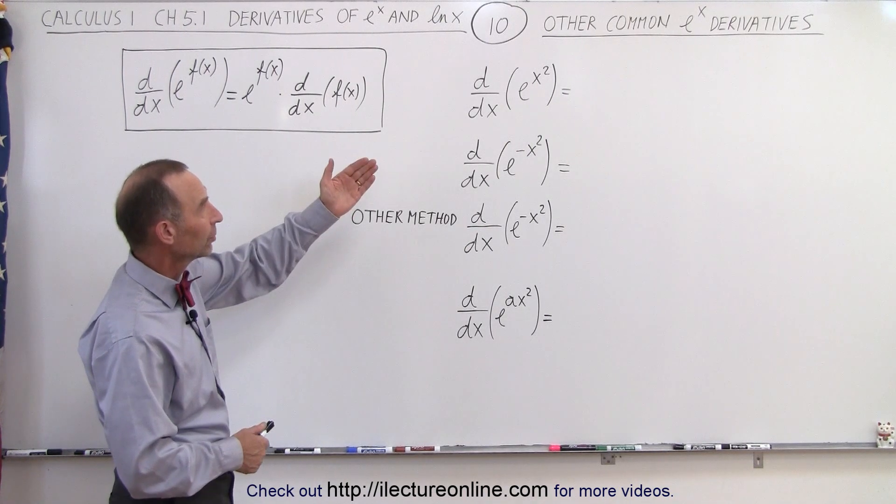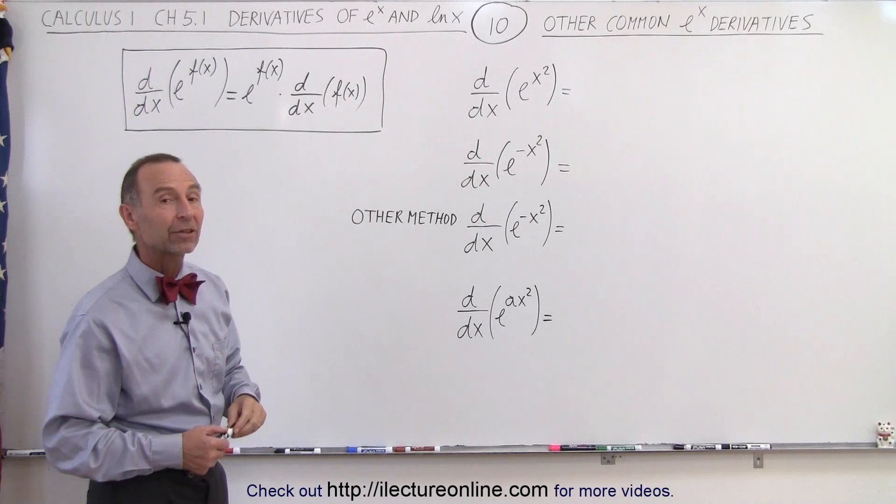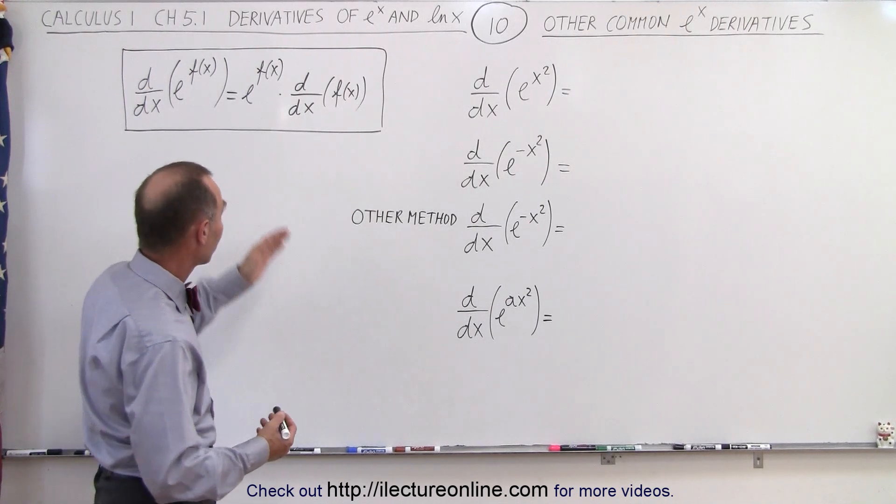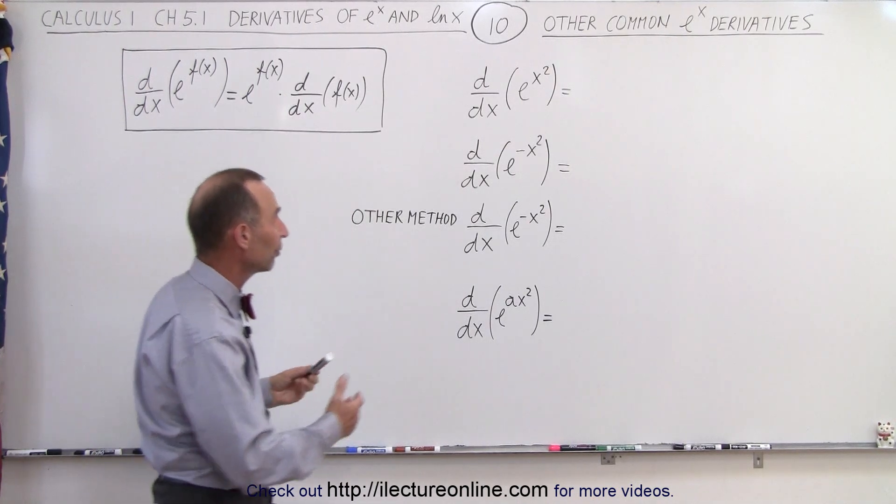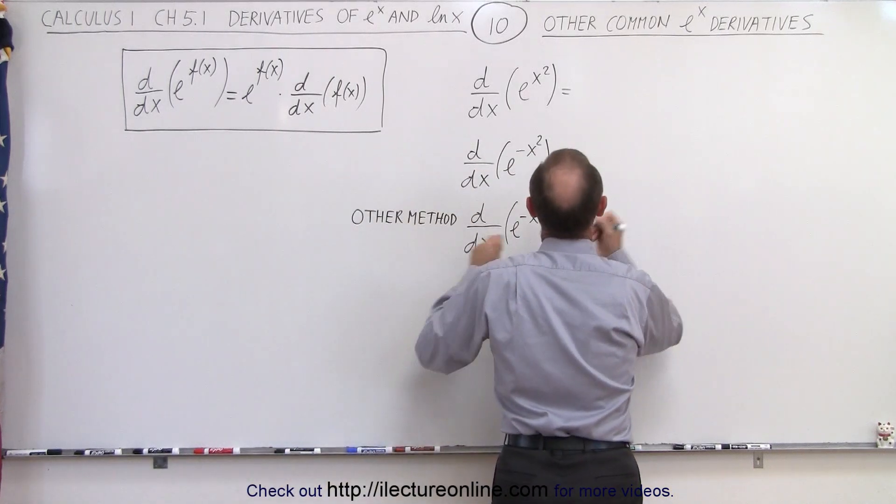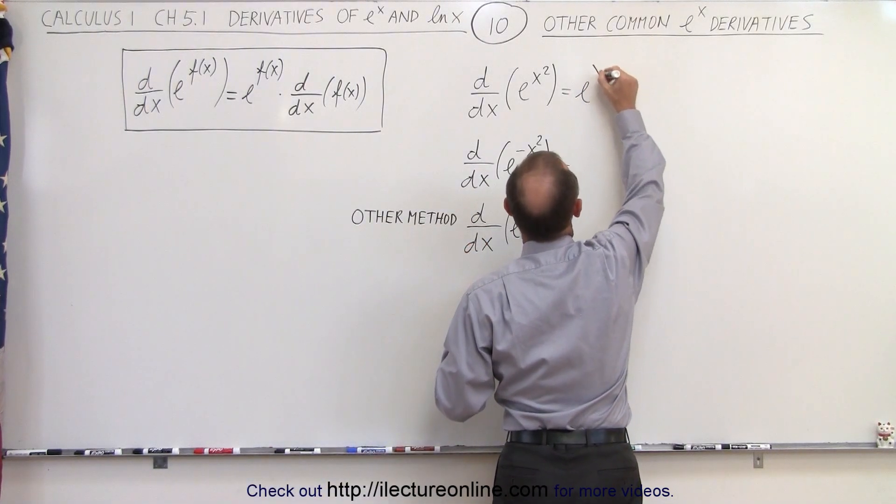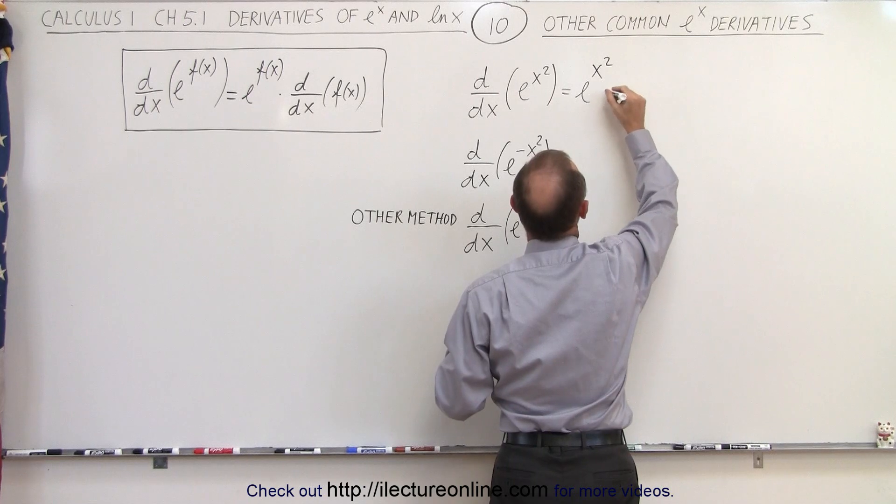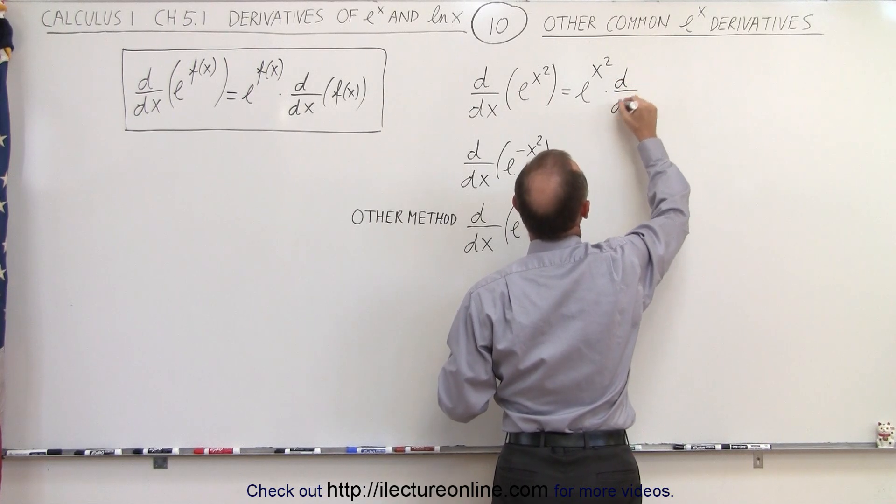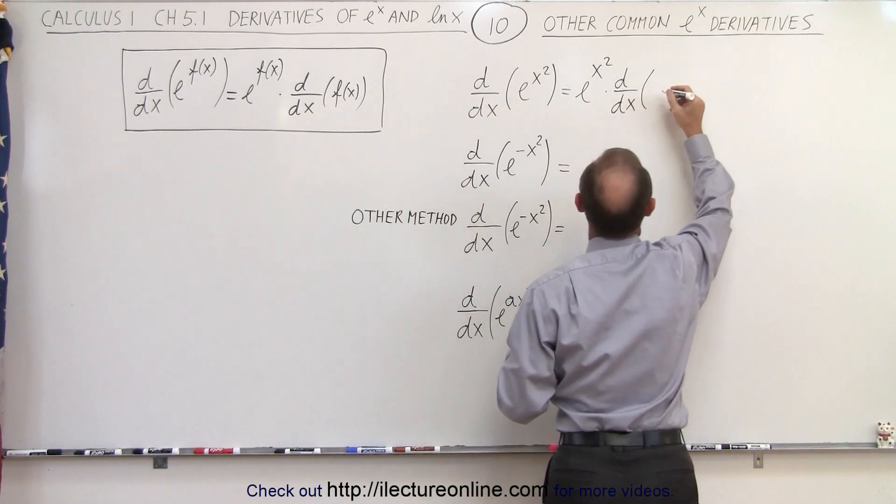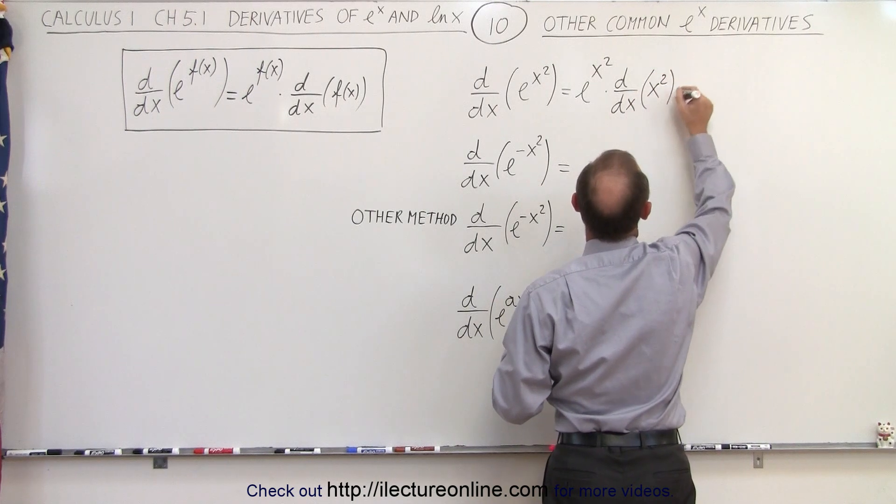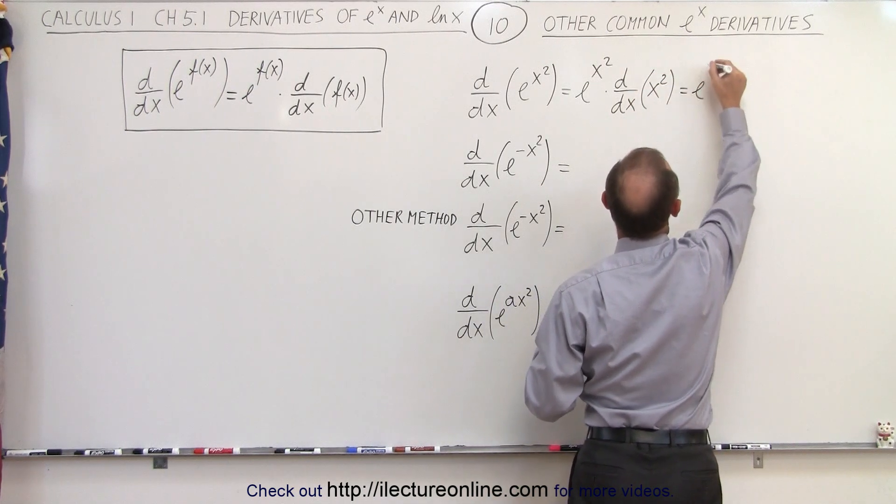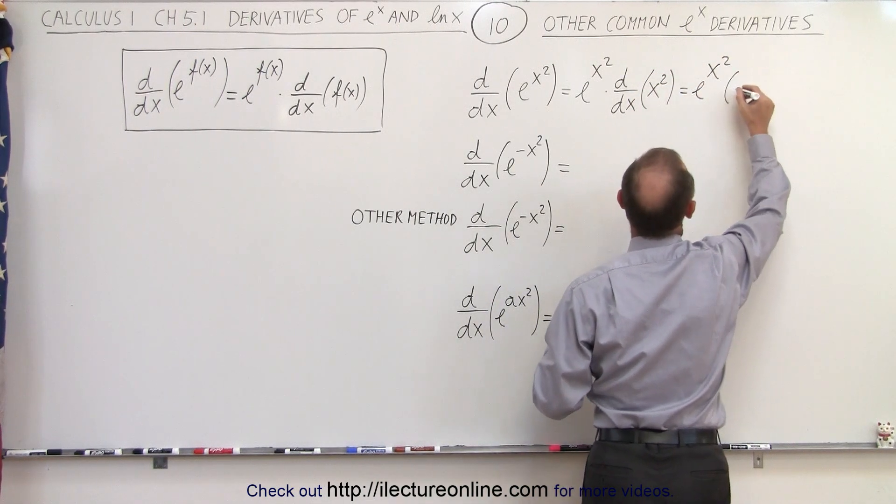So let's now tackle the derivative of e to the x squared. We use the very same principle as we did before. We're going to repeat the function e to the x squared. And now we're going to take the derivative of the exponent. And in this case, the exponent is x squared.